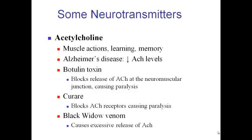Acetylcholine is a very important neurotransmitter involved in muscle action as well as learning and memory. With Alzheimer's disease, people have lower levels of acetylcholine. The botulinum toxin blocks the release of acetylcholine at the neuromuscular junction, causing paralysis. Curare has a similar effect but blocks the receptors. In both cases, acetylcholine activity is stopped and you have paralysis.